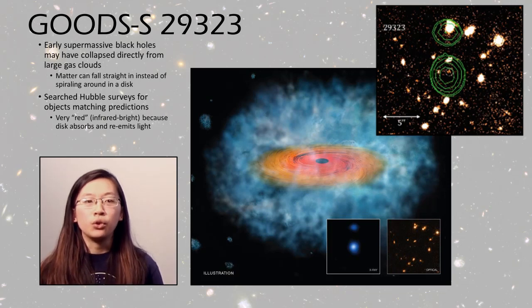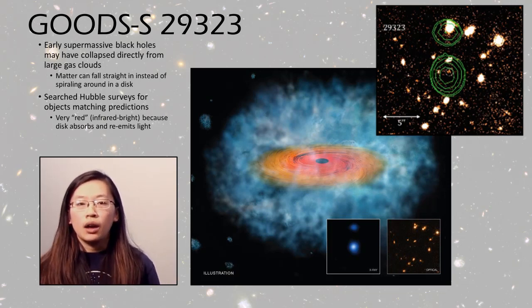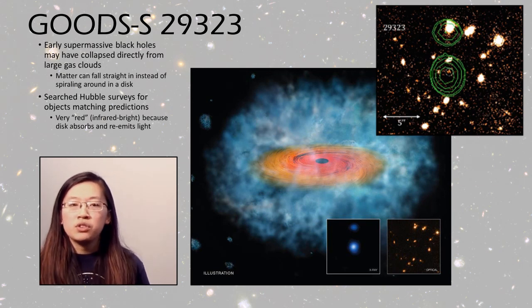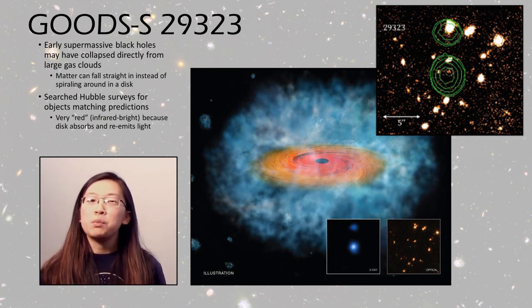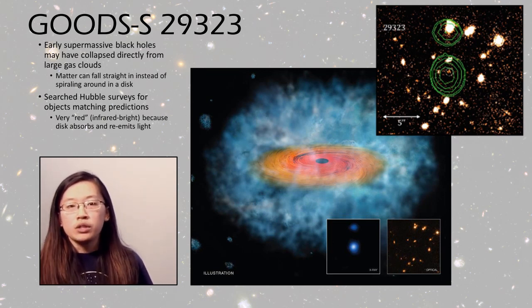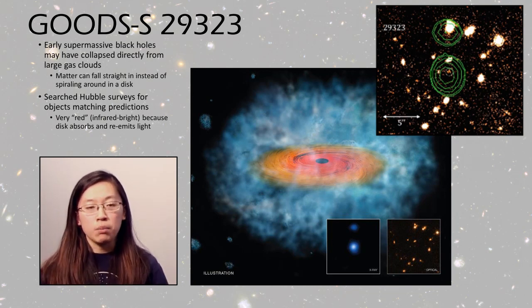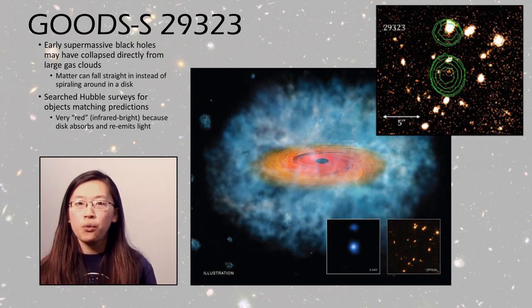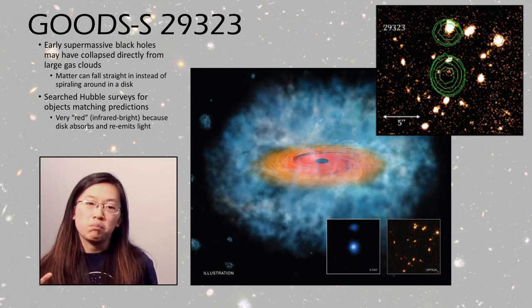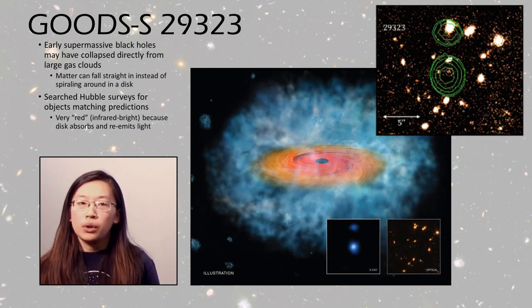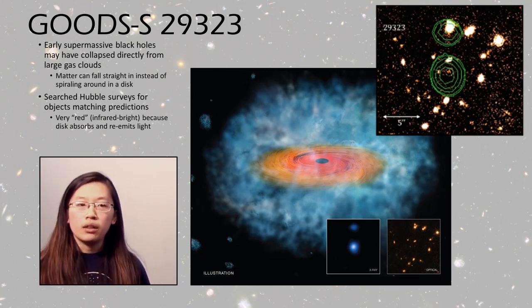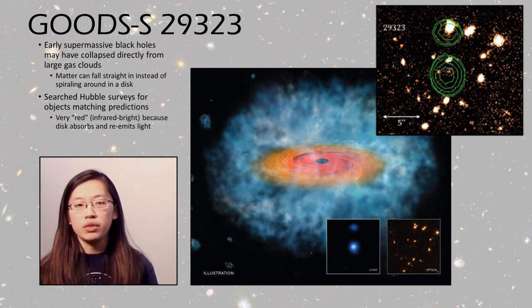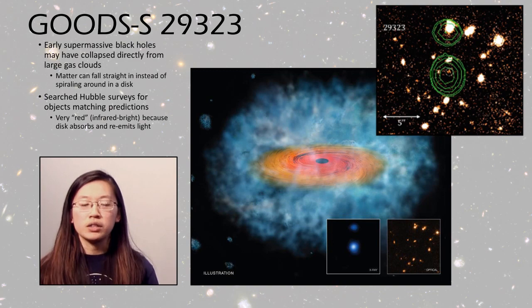Our next DSO is GoodS 29323, also found in a Hubble survey. Specifically, they were searching for objects matching predictions of what early supermassive black holes might have looked like. Instead of accreting matter through a disk, early supermassive black holes might have formed from a gas cloud that collapsed directly in. Scientists searched the Hubble surveys for very red, infrared-bright objects — expected because gas and dust in this disk should absorb and re-emit the light — and they did find objects such as this one.